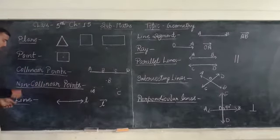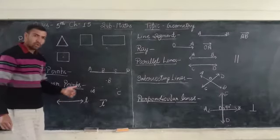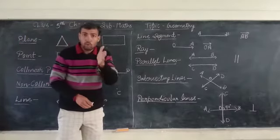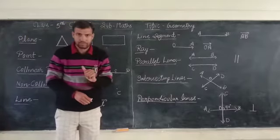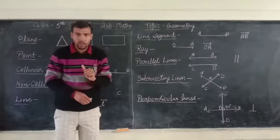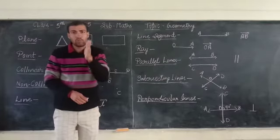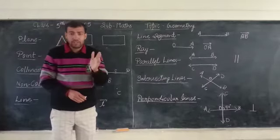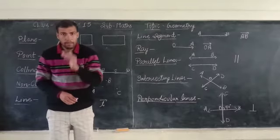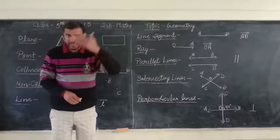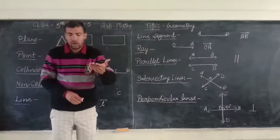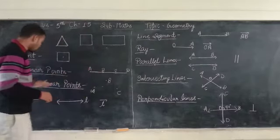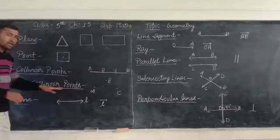Next: Non-collinear points. What is the definition of non-collinear points? Three or more than three points that do not lie on the same line — those are non-collinear points.